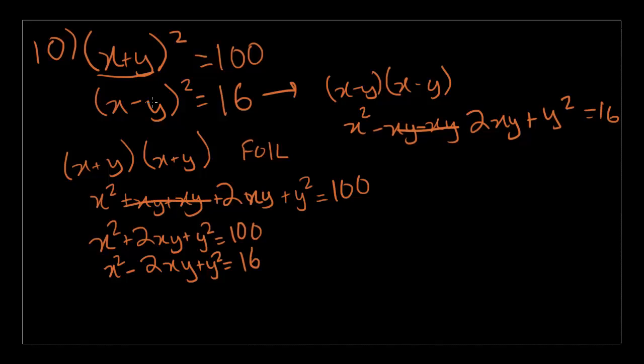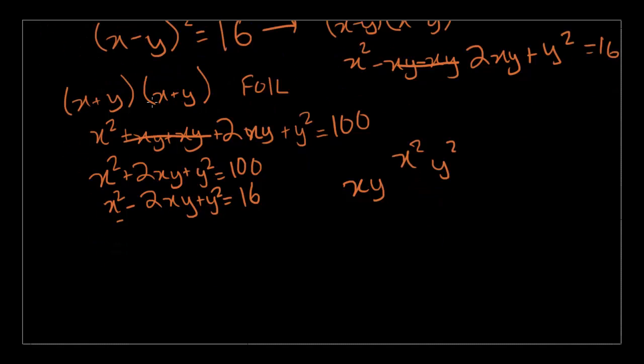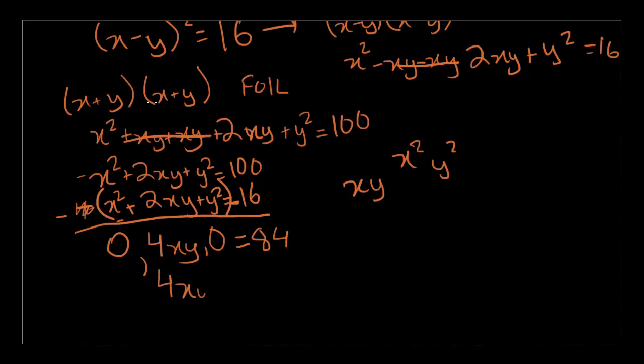In this case, what we have to do is, since we need to find what xy is equal to, we need to get rid of the x squared and the y squared. To do this, all we can do is subtract this equation from this equation. When we subtract the entire thing, we're also flipping signs in the bottom equation. So it's going to be x squared minus x squared is 0. 2xy minus minus 2xy, which turns it into a plus, will equal 4xy. And then, y squared minus y squared, this is still a negative sign, is going to equal 0. This will equal 16, we'll get a negative sign now. So 100 minus 16 is going to equal 84. So our equation simplifies out to 4xy equals 84.